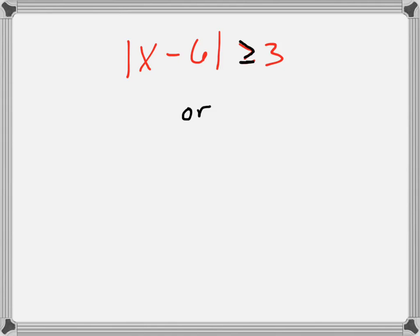The first step is to write it just like it says without the absolute value sign, and then change the answer to a negative and flip the sign. Those are the two parts of your inequality.